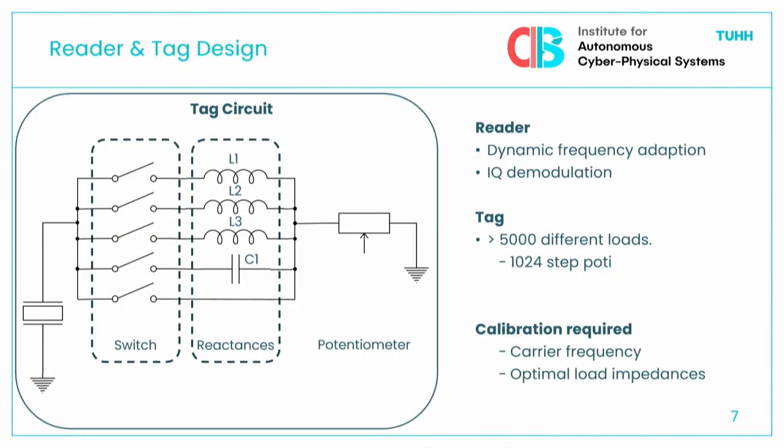Our approach was to design a tag that can generate a wide range of different load impedances. We use an analog switch and a set of different reactances — basically inductors and capacitors — between which we can switch. In series with that there's a potentiometer where we can with high resolution change the series resistance. All in all, this tag can generate more than 5,000 different load impedances over a wide range, which enables us to adapt to any channel.